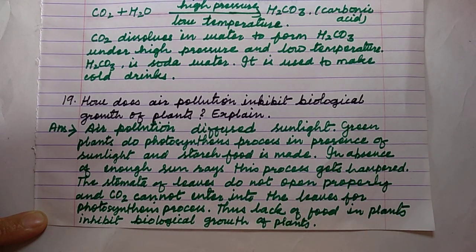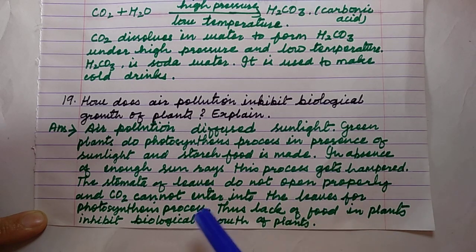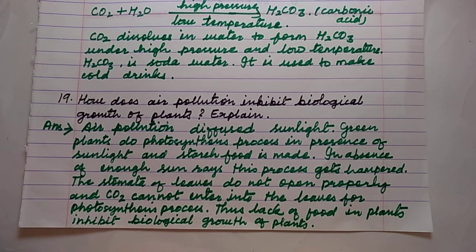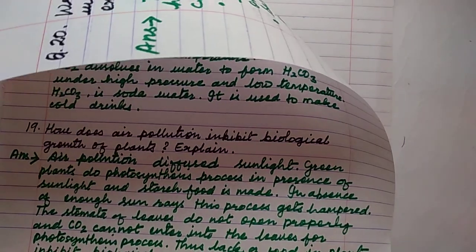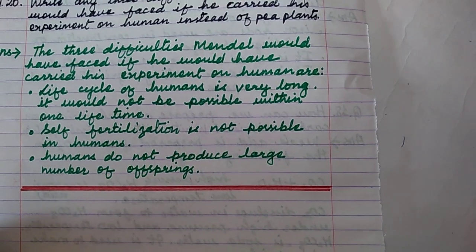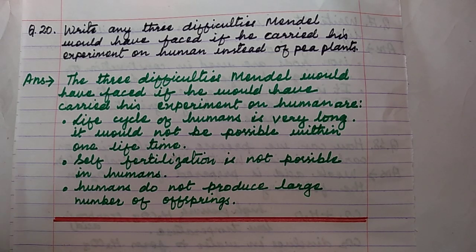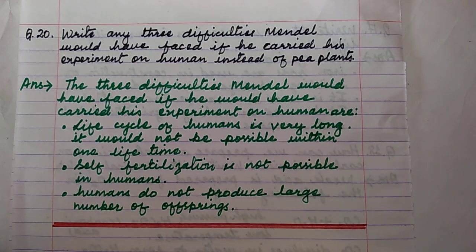Because of air pollution, food cannot be prepared in plants in sufficient amounts, causing disturbance in biological growth. If sunlight is not strong and stomata do not open properly, carbon dioxide cannot enter leaves, and chlorophyll cannot absorb enough sunlight. Starch food made during photosynthesis is essential for growth; since this food is insufficient, the growth of the plant is disturbed or prevented.